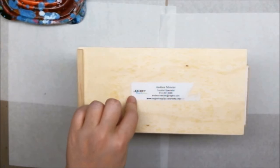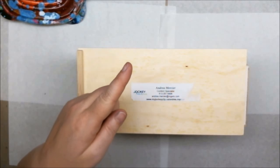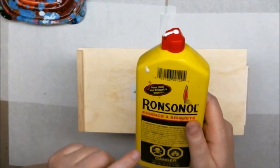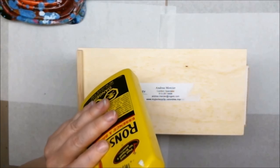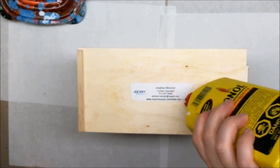I'm going to remove the label from the bottom. Now I have done this with plastic. I don't know if this is going to work with wood, but when I have labels on plastic I use lighter fluid and what it does is it dissolves the adhesive.